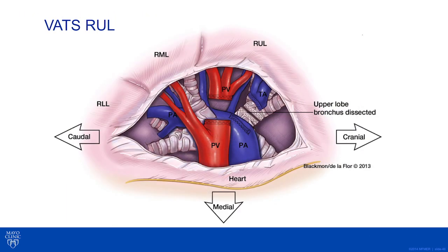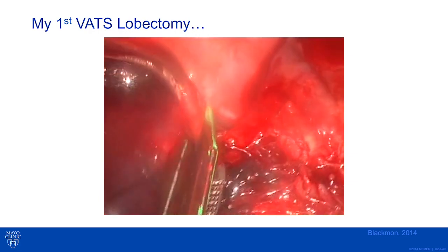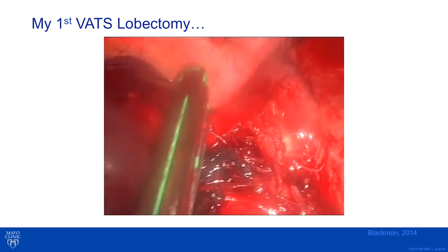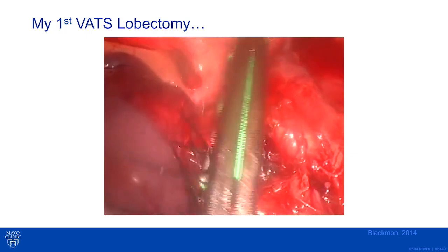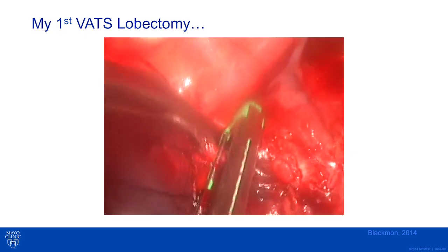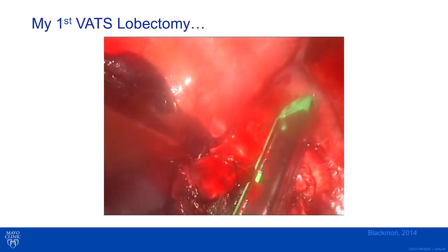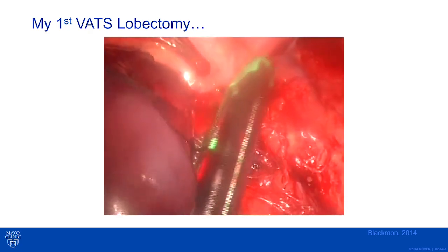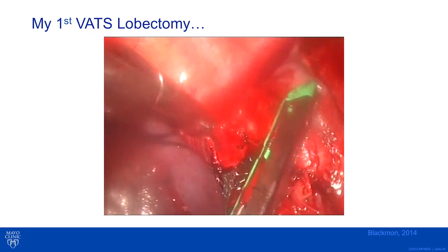The pulmonary vein branches to the right upper lobe had already been divided, the truncus anterior branches had been encircled, stapled, and divided, and the bronchus was the only final structure needing division. While passing the stapler, I found it very difficult because my port angles were not perfect, retraction of the lung was in the wrong direction, and I did not use haptic feedback. I did not feel the resistance as I passed the stapler through the membranous portion of the right upper lobe bronchus, and I successfully stapled the front end but left the membranous portion.